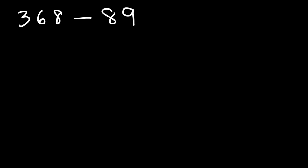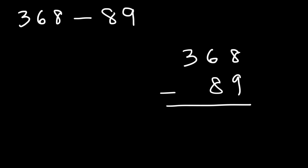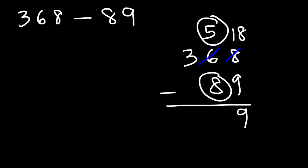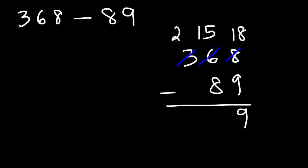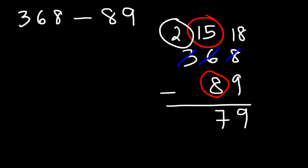Let's work on another similar example: 368 minus 89. So 8 minus 9 is a negative number, so we need to borrow a 1 from the 6. The 6 becomes a 5, and the 8 becomes 18. Now we subtract 18 by 9, which is 9. Then if we try to subtract 5 by 8, that's negative 3, so we need to borrow a 1. The 3 becomes a 2, and the 5 changes to 15. So 15 minus 8 is 7, and then we bring down the 2. The answer is 279.